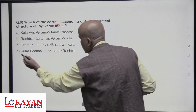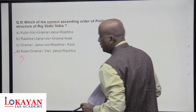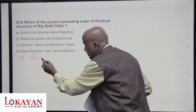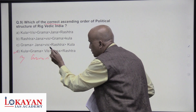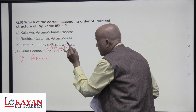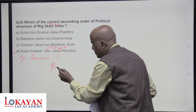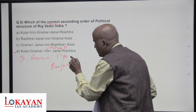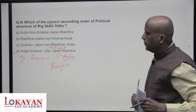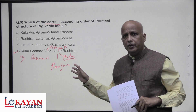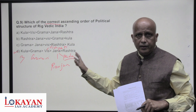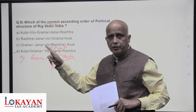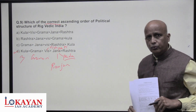Which is the correct ascending order of the political structure of the Rigvedic period? Kula (family), then Grama (village), whose chief is the Gramani. Many Gramas together form a Visha; the chief is the Vishapati. Then comes Jana, whose chief is the Rajan. Later Janapada, then Mahajanapada, and finally Rashtra as the state system fully emerged. So the sequence is: Kula, Grama, Visha, Jana, Janapada, Mahajanapada, Rashtra.